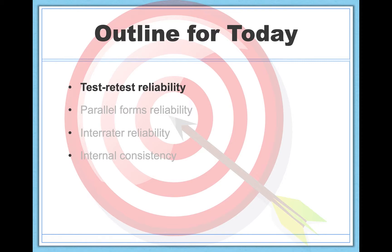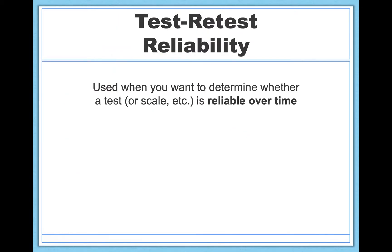So let's start with test-retest reliability. Test-retest reliability, as the name suggests, is used when you want to determine whether a test, or a scale, or some psychological measurement tool is reliable over time. And the idea is that you're going to test people, and then you're going to retest them, and you're going to see if scores align. Are your scores consistent over time?